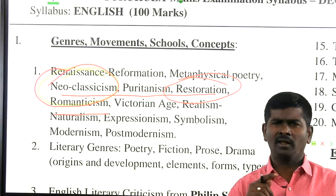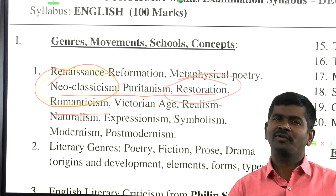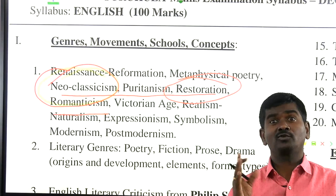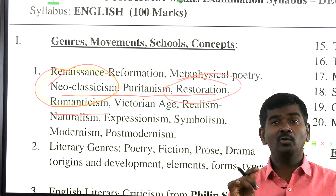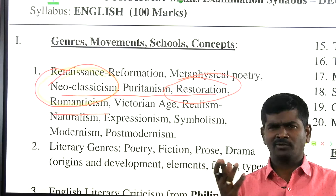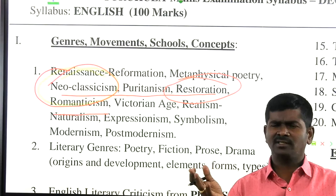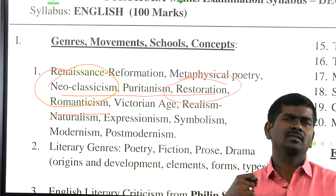Schools in Romanticism: Lake School of Poetry, Southern School of Poetry, Cockney School of Poetry, Revolutionary Poetry. Also Historical School of Novelists and Gothic School of Novelists — seven to eight important types of schools. Lake School: Wordsworth and Coleridge. Southern School Poetry: Robert Southey, P.B. Shelley, Mary Shelley, and John Keats. Historical School of Novelists: Sir Walter Scott, Addison Ainsworth, Benjamin Disraeli, and Edward Bulwer-Lytton.